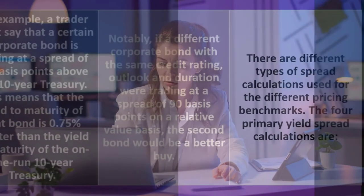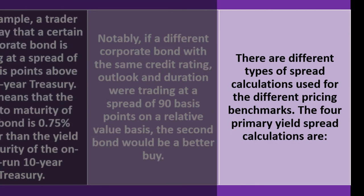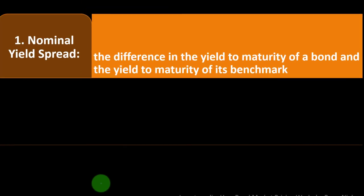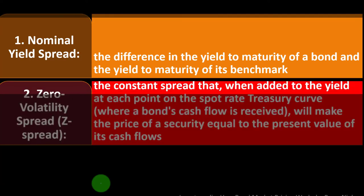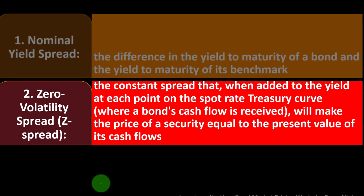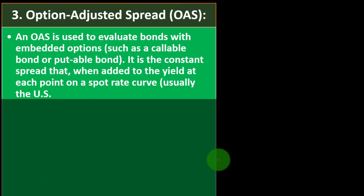There are different types of spread calculations used for different pricing benchmarks. The four primary yield spread calculations are: (1) Nominal yield spread — the difference in yield to maturity of a bond and the yield to maturity of its benchmark; (2) Zero volatility spread (Z-spread) — the constant spread that, when added to the yield at each point on the spot rate Treasury curve where a bond's cash flow is received, will make the price of a security equal to the present value of its cash flows; (3) Option-adjusted spread (OAS) — used to evaluate bonds with embedded options such as callable or putable bonds.